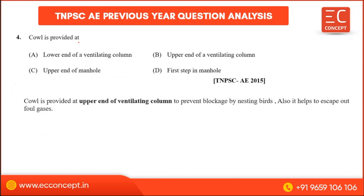Next question: a cowl is provided at the upper end of a ventilating column to prevent blockage by nesting birds and also to help escape foul gases. So the answer for this question is this.